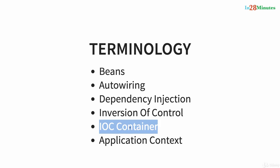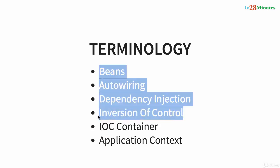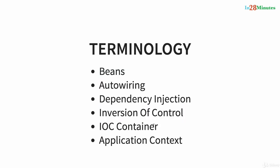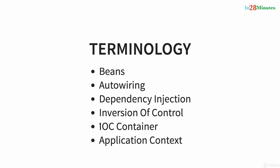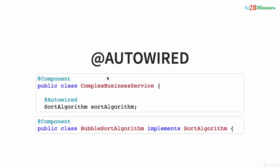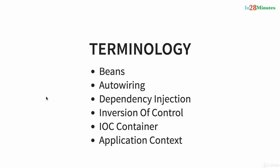That leads us nicely to the next terminology: IOC container, which stands for inversion of control container. An IOC container is a generic term for anything implementing inversion of control. In the case of Spring Framework, the typical IOC container is the application context. The application context is where all the beans are created and managed — it is the most important part of the Spring Framework, where all the core logic happens.